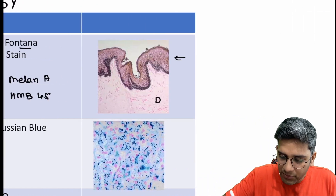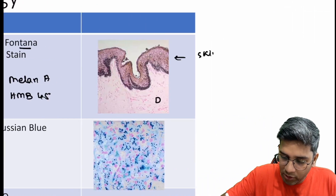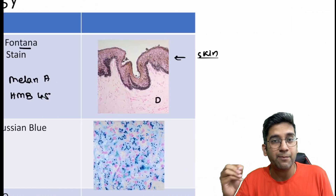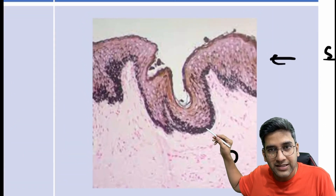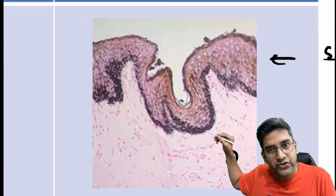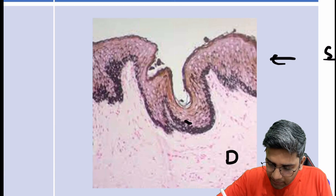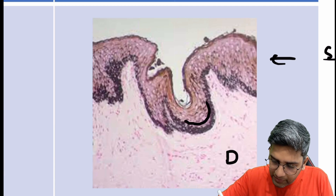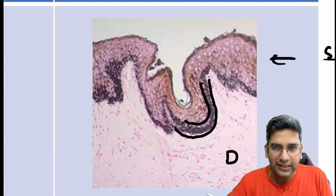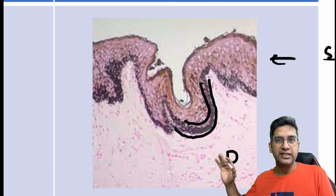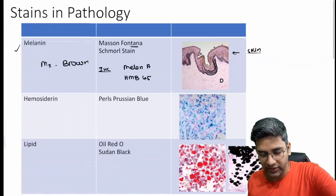Here we have a beautiful skin biopsy. In the skin biopsy, melanocytes are seen in the basal layer of the epidermis. This is the basal layer — the place where melanocytes are seen. If you look at this, the basal layer of epidermis alone is having a little bit of black cushion color. That's your classical melanin or Mason-Fontana stain appearance in a biopsy.